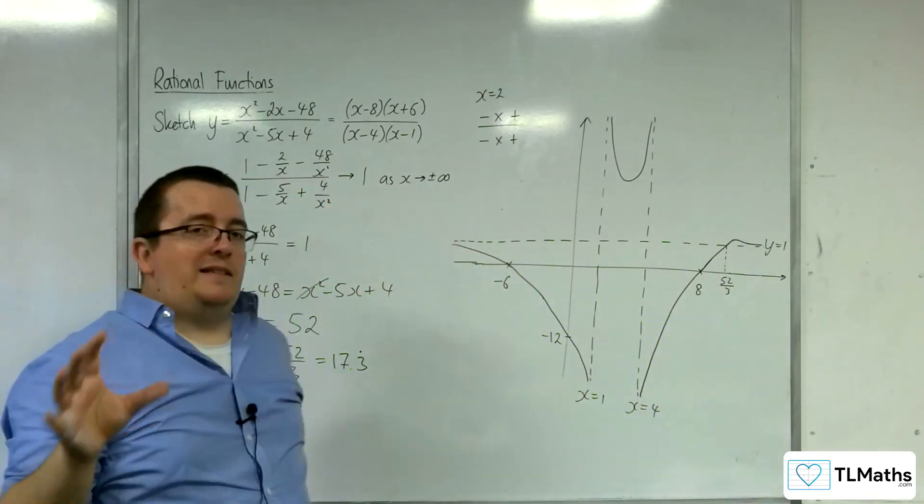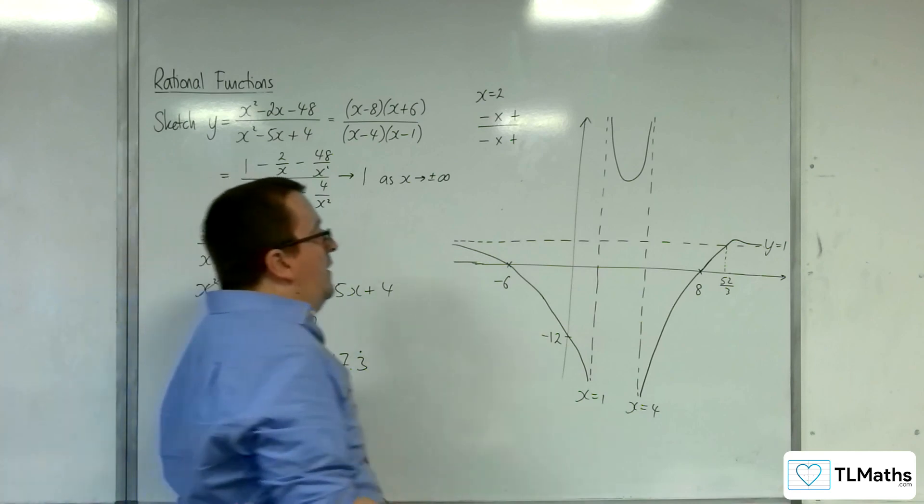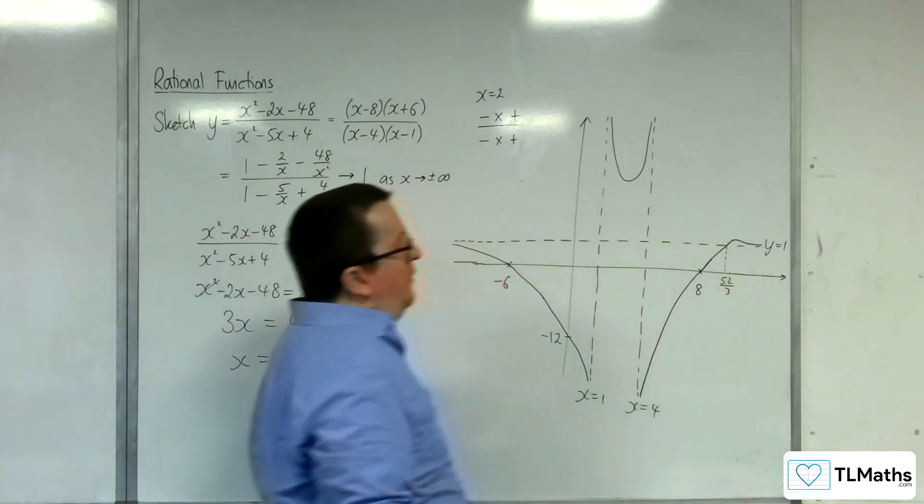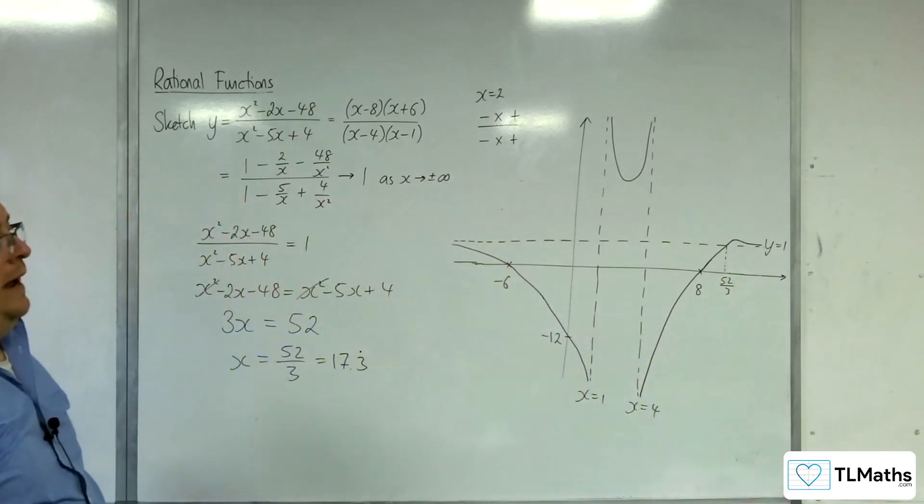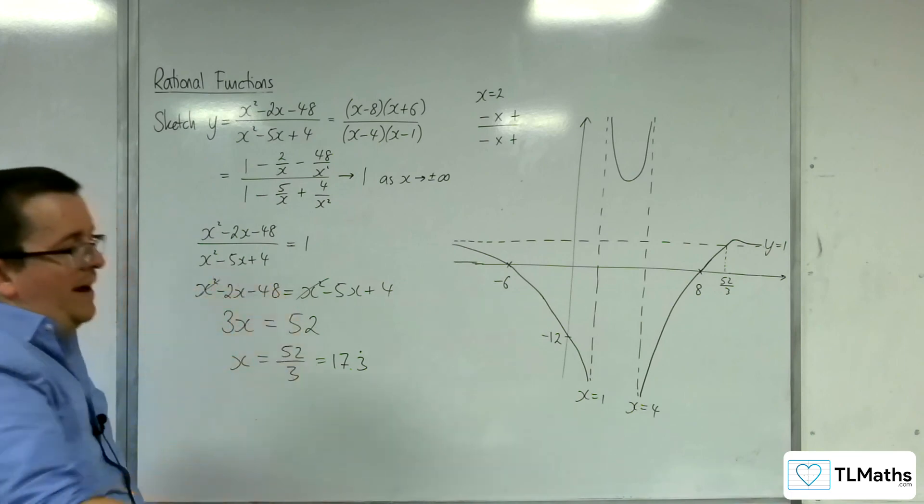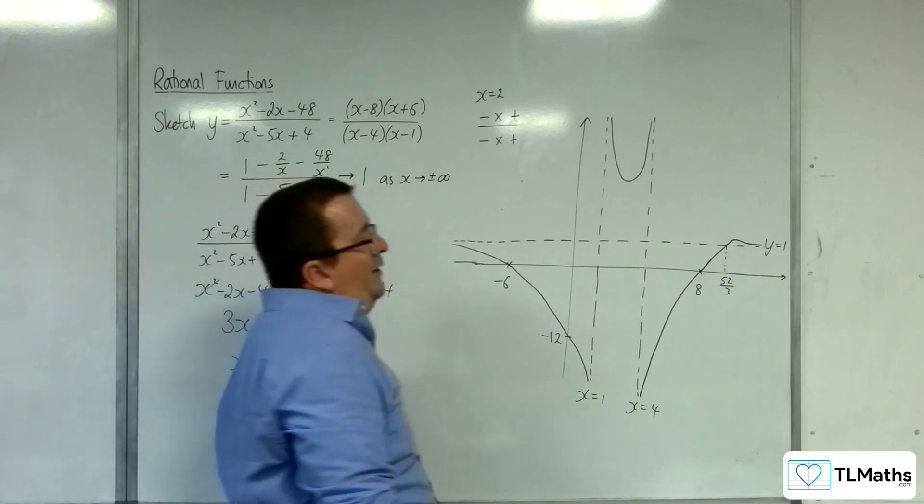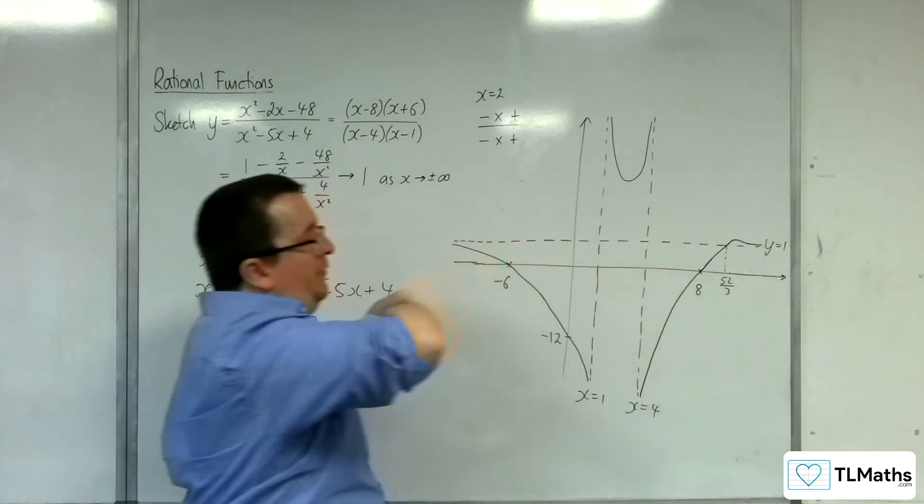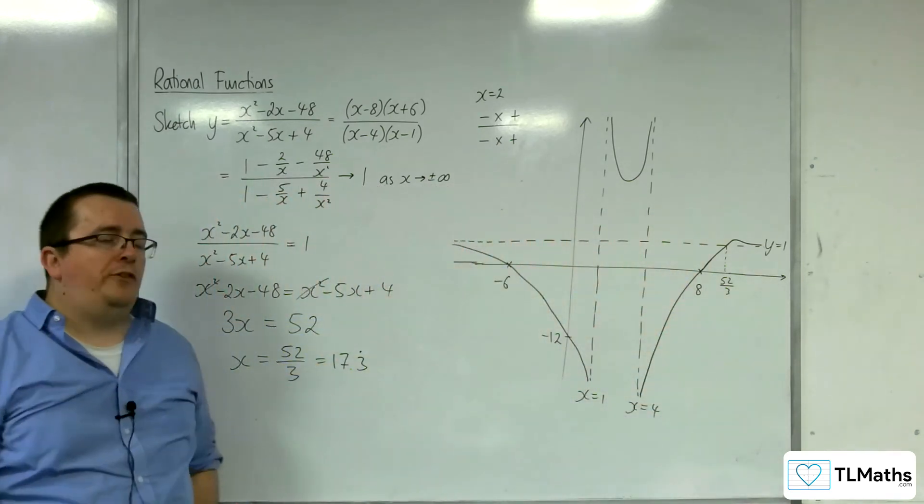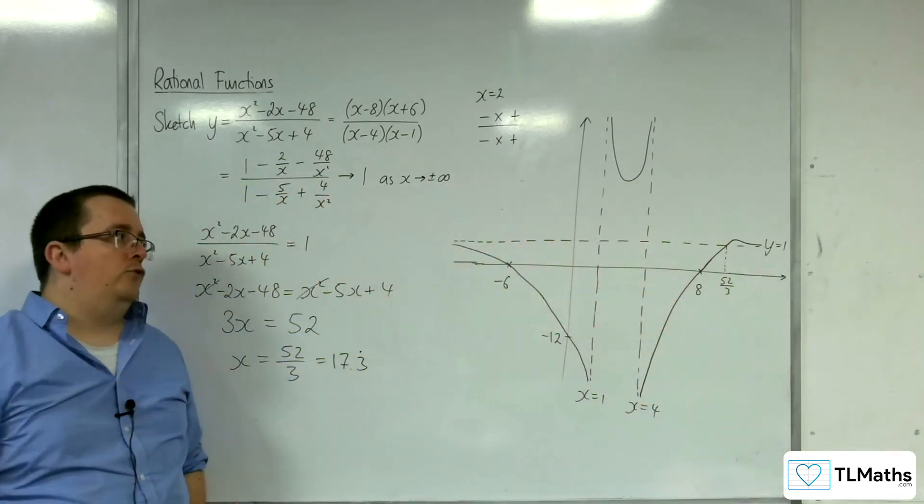So this one has a little bit more interesting behaviour where it has to cross the horizontal asymptote in order to then come back on itself. You might want to look this up on Desmos or some other graphing package just so you can see what this graph looks like.